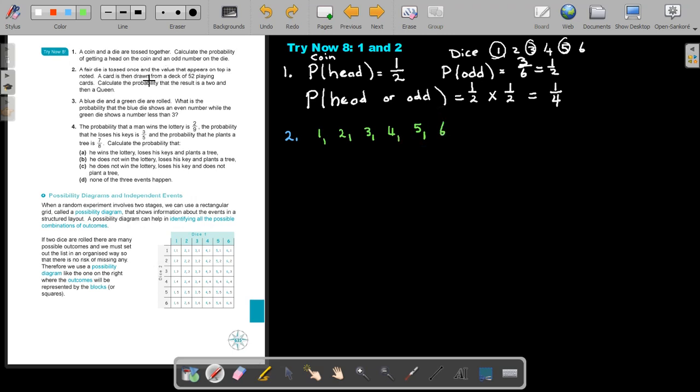a card is then drawn from a pack of 52 playing cards. Calculate the probability that the result is a 2, so it's actually just referring to this 2. So the probability of that 2, there's only one 2. It's 1 out of 6. Okay, so that is for my dice. But now we go on. Let's just number 2. Calculate the probability that the result is a 2 and then a queen.